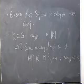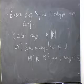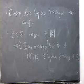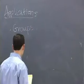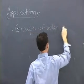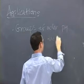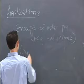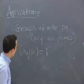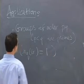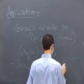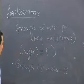Here are a couple of applications we saw. For groups of order pq, where p < q are primes — you should definitely know this — the number of Sylow q-subgroups is one. We also took a brief look at groups of order twelve.